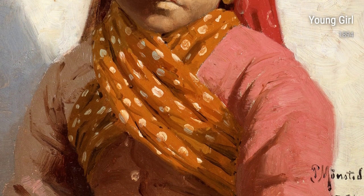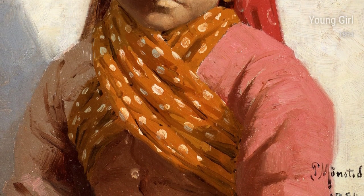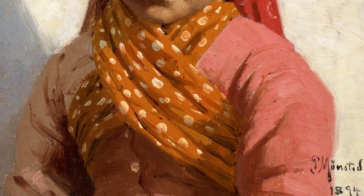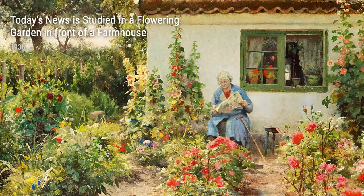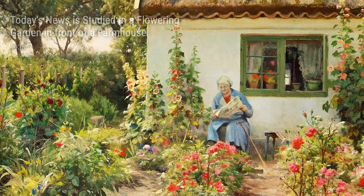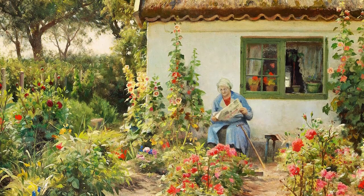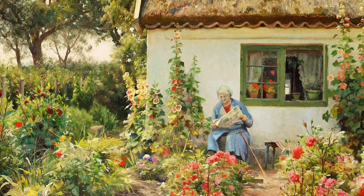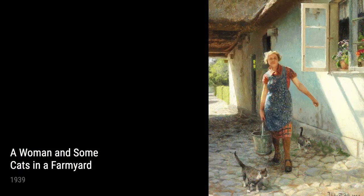Born in Denmark in 1859, Mönsted grew up surrounded by the stunning landscapes and picturesque scenes that would later inspire his art. As a young boy, he developed a deep love and appreciation for nature, spending countless hours exploring the countryside and sketching its picturesque beauty. These early experiences laid the foundation for his future as an artist.